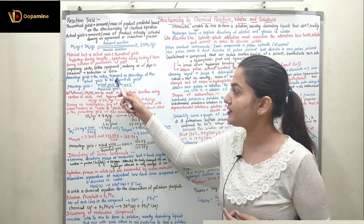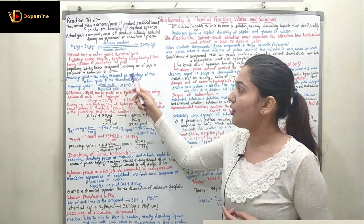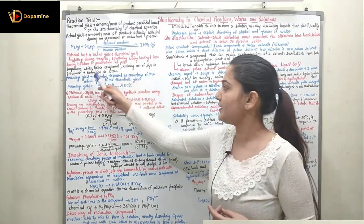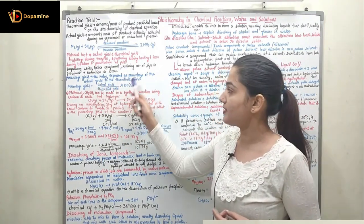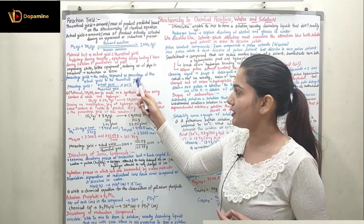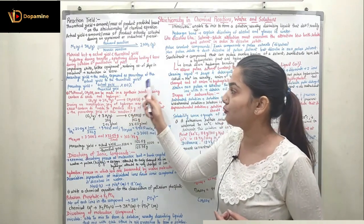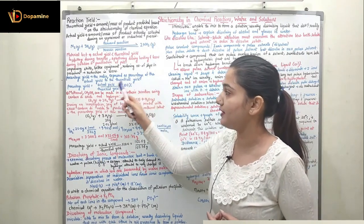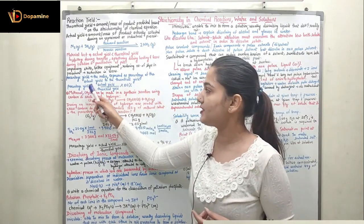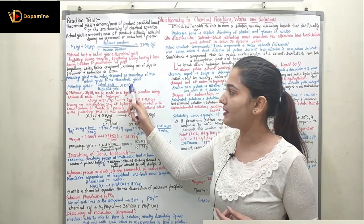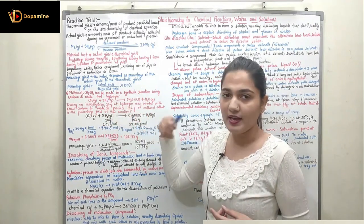What is the percentage yield? It is expressed as a percentage — the ratio of actual yield to theoretical yield. The formula is: percentage yield = (actual yield / theoretical yield) × 100.